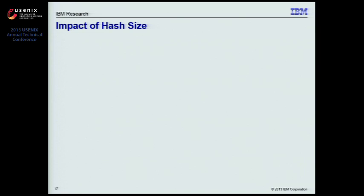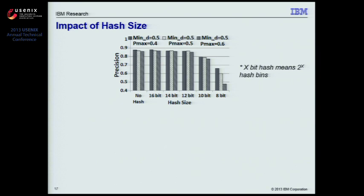Next, we evaluate the impact of hash size on using hashing to reduce dimensionality. The main concern with hashing is possible information loss from compressing high-dimensional features into lower-dimensional space. We run MaltonX with different hash sizes and compare the results with a baseline case where no hash is used. As expected, with increasing hash size, accuracy also increases. When the hash size is larger than 12 bits — meaning 2¹² hash bins — the collision probability seems negligible and the accuracy is almost the same as when no hashing is used.